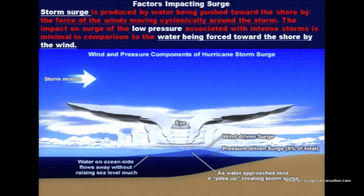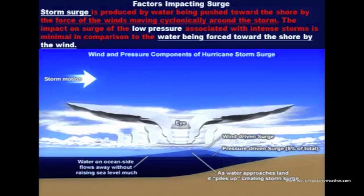Storm surge is produced by water being pushed in by the storm — force winds moving cyclonically around the storm — and the impact of low pressure associated with the storm. In other words, the wind is blowing water onshore, kind of like if you were blowing on a cup of water and see the ripples coming across it.